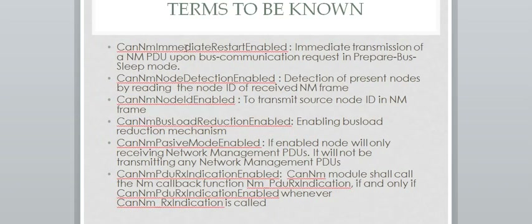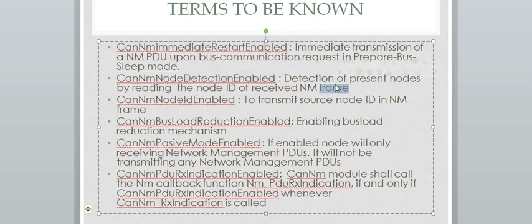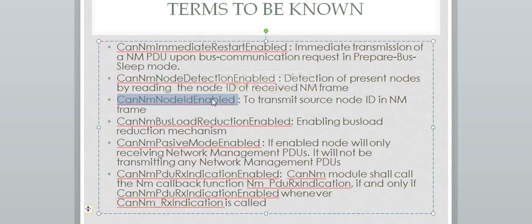CAN-NM Immediate Restart Enabled is a configurable tag in the DaVinci configurator. If enabled, whenever you are in Prepare Bus Sleep State and an NM frame is received, an NM frame will immediately be transmitted from our ECU. CAN-NM Node Detection Enabled is also a configurable tag; if enabled, our ECU will detect which nodes in the cluster are active by reading the source node ID of the received NM frame. CAN-NM Node ID Enabled: only if this is enabled will our source node ID be transmitted in the NM frame.